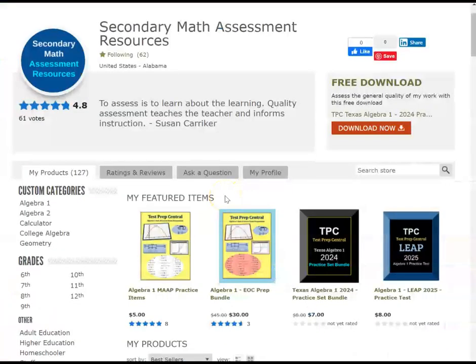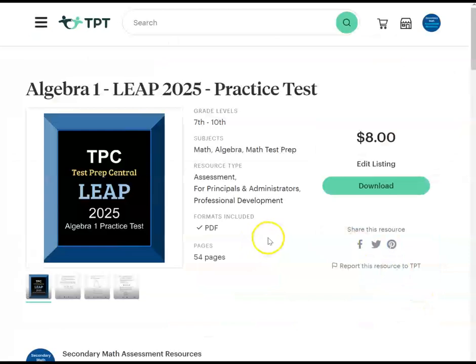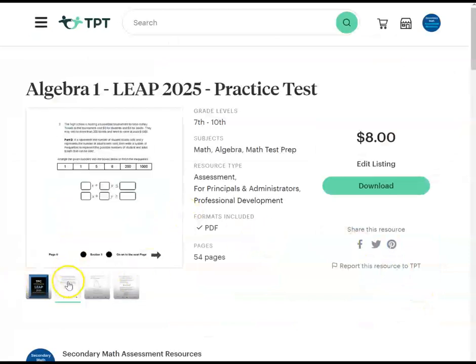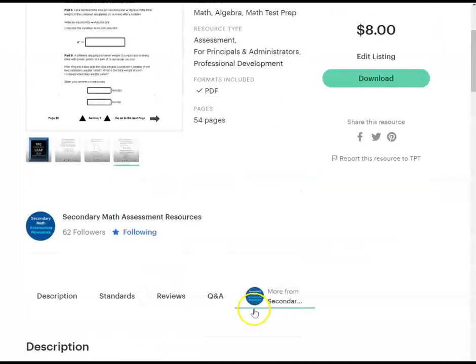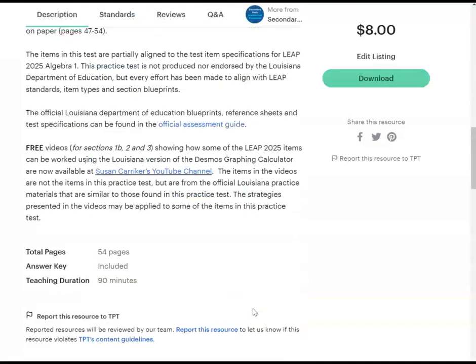If you haven't had a chance to check out the LEAP 2025 practice test that I've created to basically mirror the test I just showed you, I encourage you to check it out in my store, Secondary Math Assessment Resources. The link is in the show notes. I didn't make this a free test, but it is a pretty good price for what you get. This is an abbreviated version of the full test. You could give it in one class period if you have a block schedule, maybe. But probably you'll want to split this up into sections. There are three sections to the test. One, B, two, and three. There are 54 pages in this document.